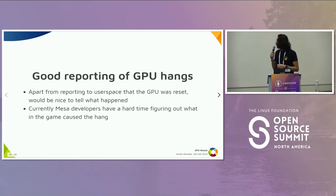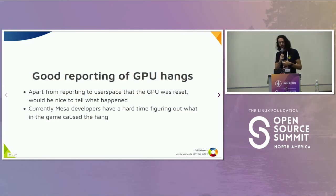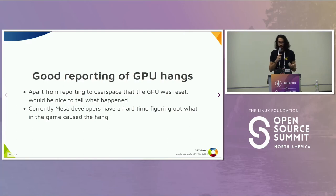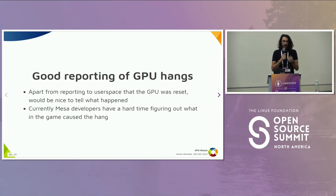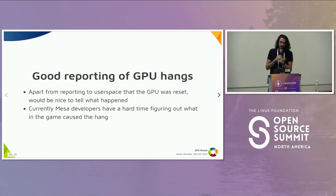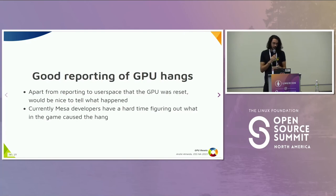Another thing we need to fix on GPU resets in Linux is not only telling user space that a GPU reset has happened, but also telling user space what triggered that reset in the first place. Because right now, if your game crashes, you go on GitLab and say 'hey, my game crashed' and you attach lines and lines of logs. Developers have a really hard time figuring out, from all those lines, what caused the hang in the first place. You have a lot of information but no context about what the GPU was running at the time it crashed.